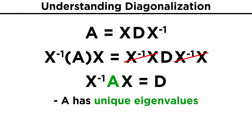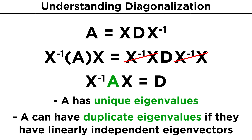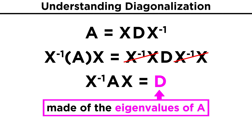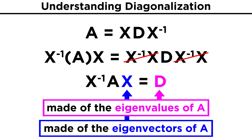This process only works for matrices that have unique eigenvalues, or if there are duplicate eigenvalues, then there must exist linearly independent eigenvectors for the duplicate values. The reason for this is that the diagonal matrix D is simply made up of the eigenvalues of A, while the matrix X is made up of the eigenvectors. So once we know the eigenvalues and eigenvectors of a matrix, the diagonalization process is easy.